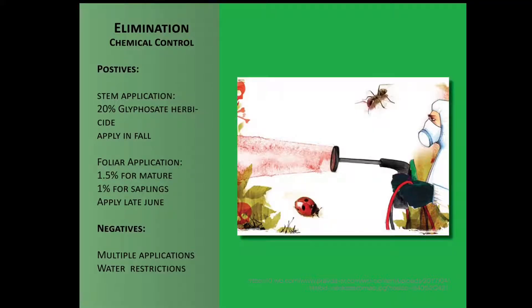There are multiple controls for the elimination process. The first one I will brief you on is the use of chemicals. An application made to pruning cuts at the base of the shrub at its crown with a solution of 20% glyphosate herbicide products, such as Roundup, in the fall is one technique.